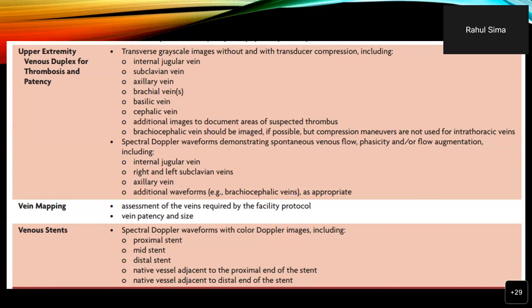Vein mapping is the assessment of veins to determine if a vein is of good size — greater than 2.5 to 3 millimeters — and patency.